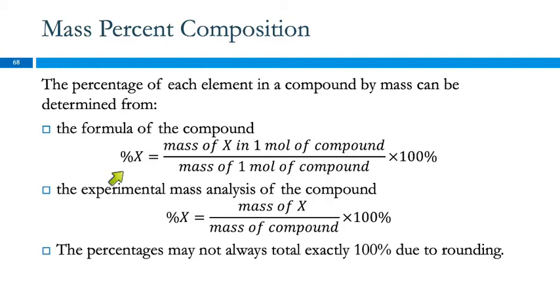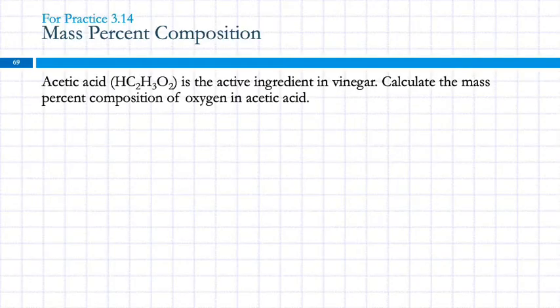So percent by mass of an element in a compound, we can do this using experimental data or by using the formula. Let's look at the formula first. If we're looking at element X, the percent of X in the compound is the mass of X in one mole of the compound divided by the mass of one mole of the compound times 100. If we're looking at experimental analysis, we're going to find the mass of X divided by the mass of the whole compound times 100. If you find the percent for each element, ideally they would add up to 100, but sometimes they'll be a little bit off due to rounding errors.